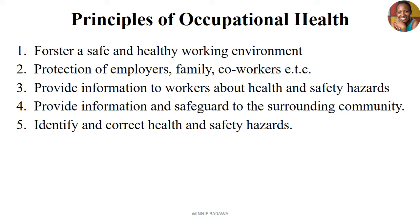The other area is the principles of occupational health — what guides occupational health and safety as an industry. The first principle is fostering a safe and healthy working environment, which is the main principle behind occupational health and safety. The environment has to be safe and healthy, catering not only for the needs of the employer but also for the needs of the workers. It also works to protect employers, families and co-workers. As much as we are focusing on protecting the workers, we also need to ensure that the employer and the families of all members in the company are also protected.